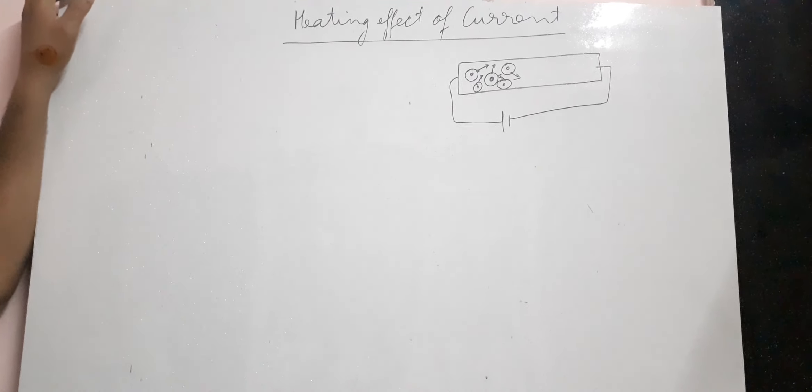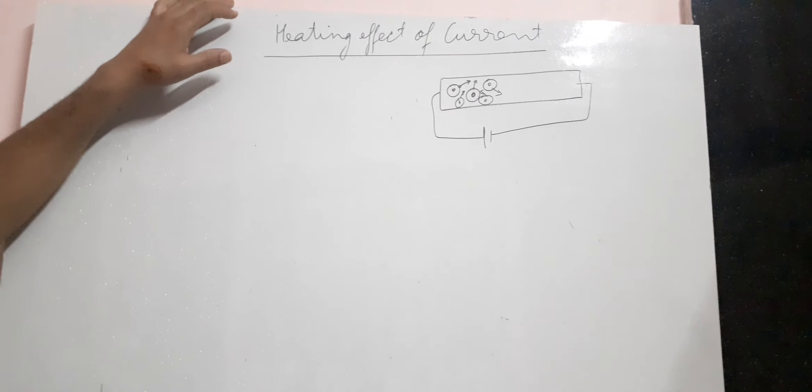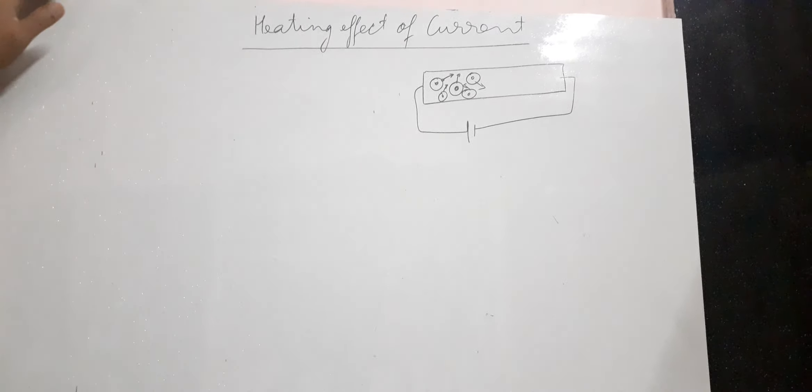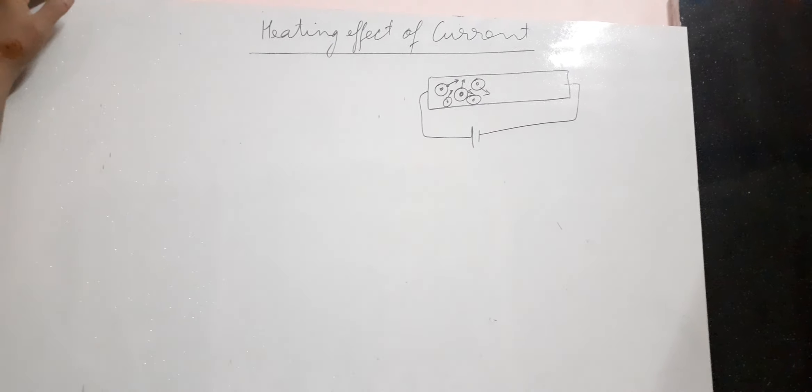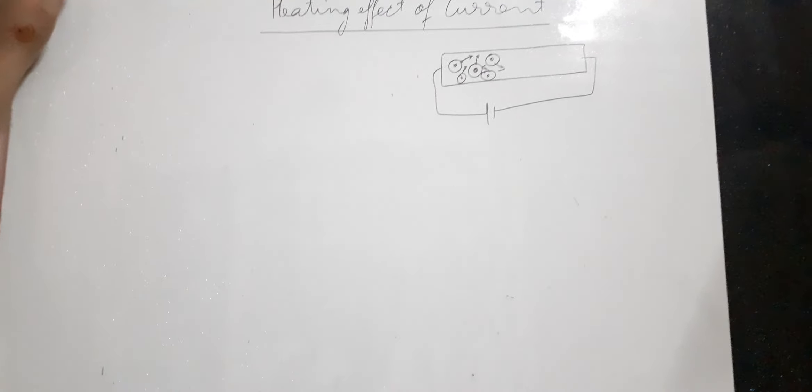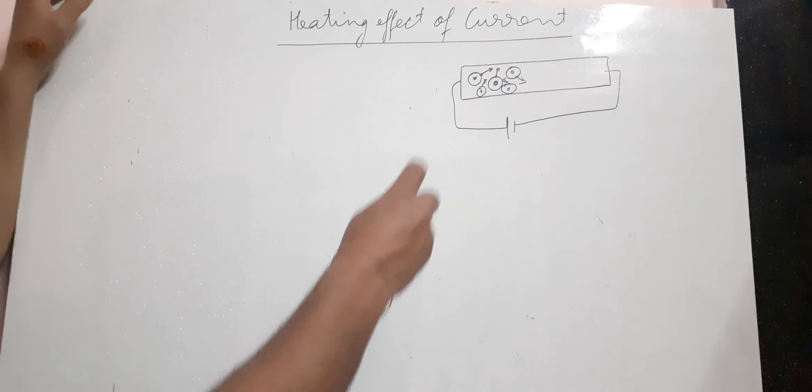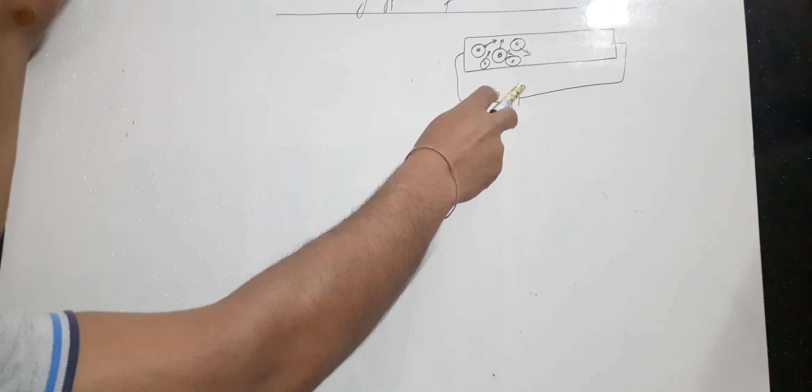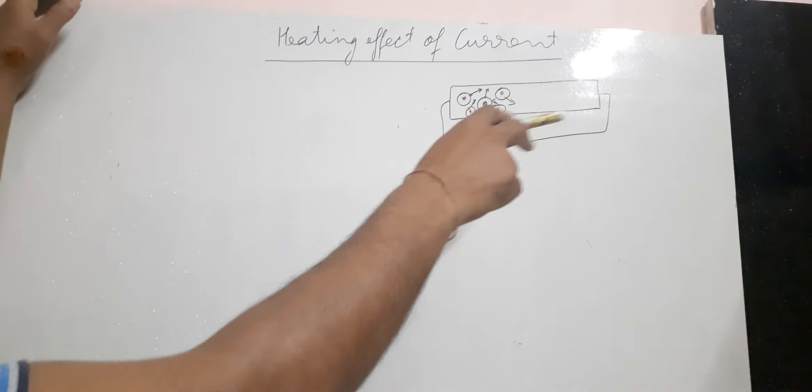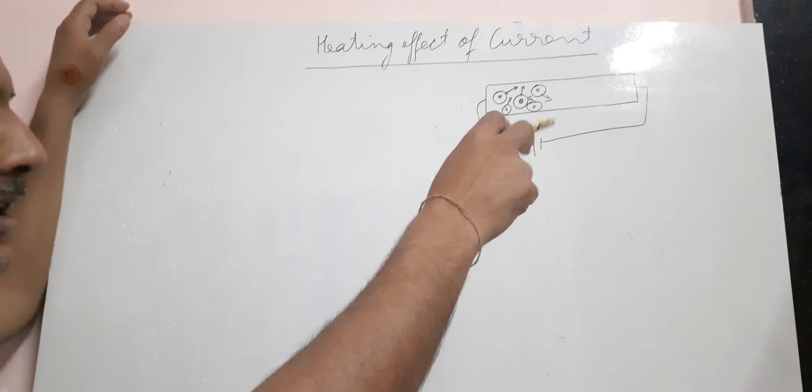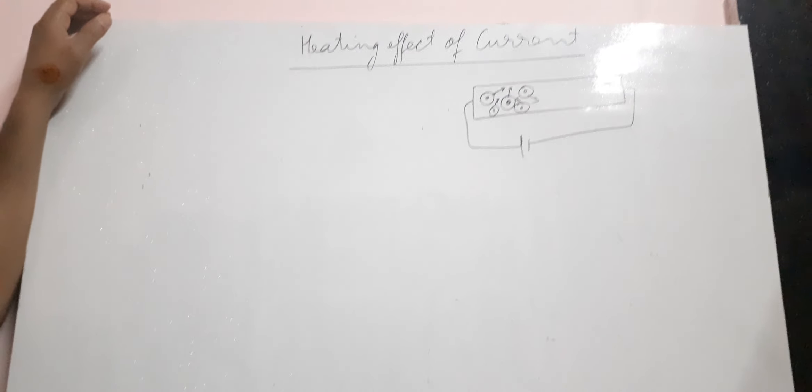Today we will be discussing the heating effect of current. During our last classes, we discussed how current flows through metals. I told you that certain electrons called carrier electrons move in a zigzag way through the wire or conductor when electric potential is applied.